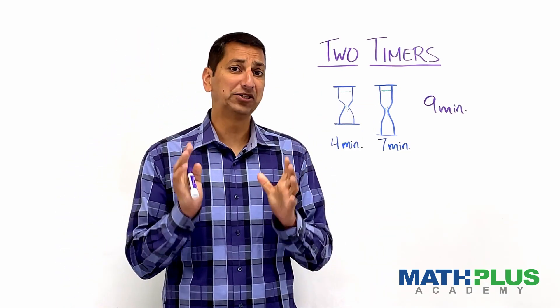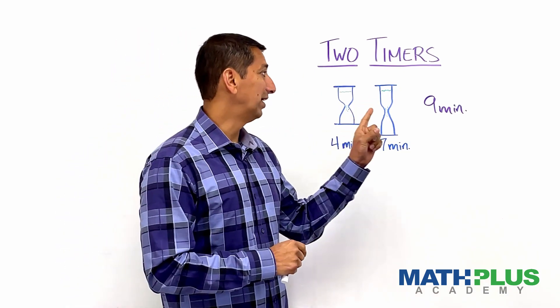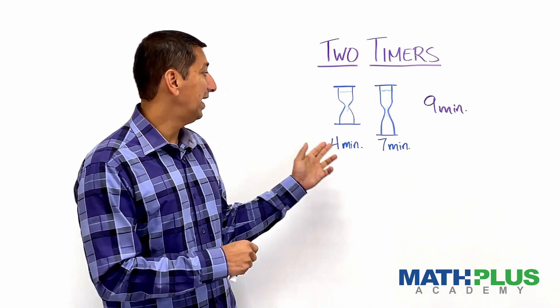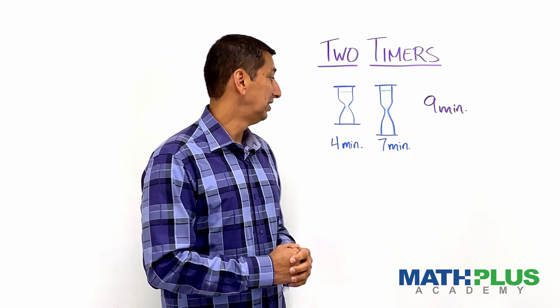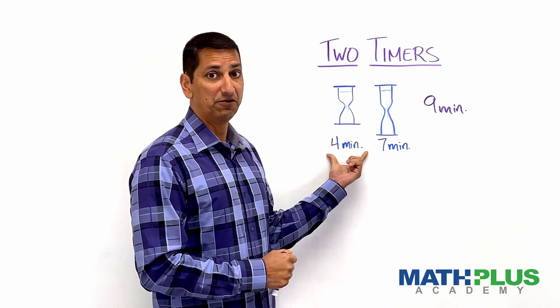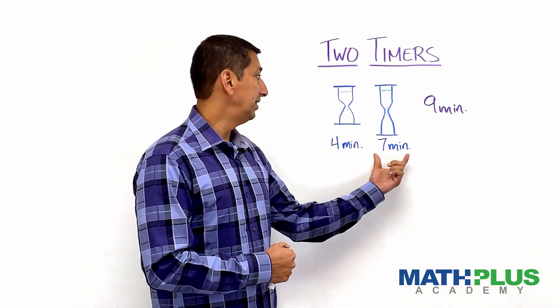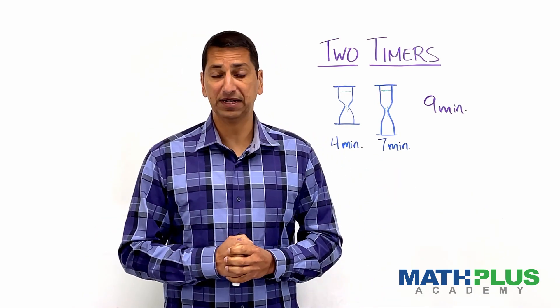We are going to try and cook an egg for exactly nine minutes to get the perfect egg, and we only have these two timers. One can measure exactly four minutes, it's a little hourglass timer where the sand falls through, and the other one, a little bit bigger, can measure seven minutes.